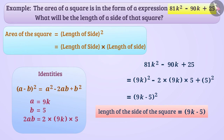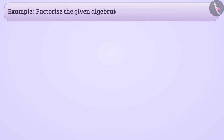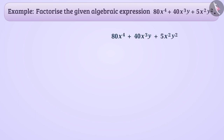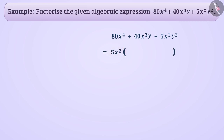Next example: factorize the given algebraic expression 80x raised to the power 4 plus 40x cube y plus 5x square y square. Pause the video and try to find the factors of this expression. First, we will check if there are any common factors in all three terms of the expression. Here, 5x square is a common factor in all terms, so we take 5x square outside of the bracket.